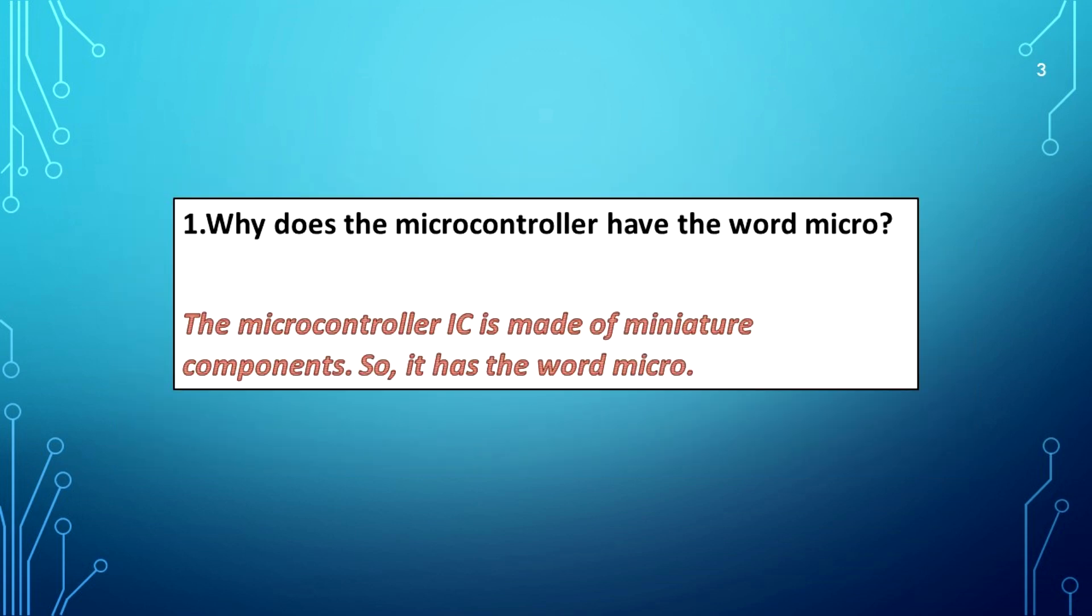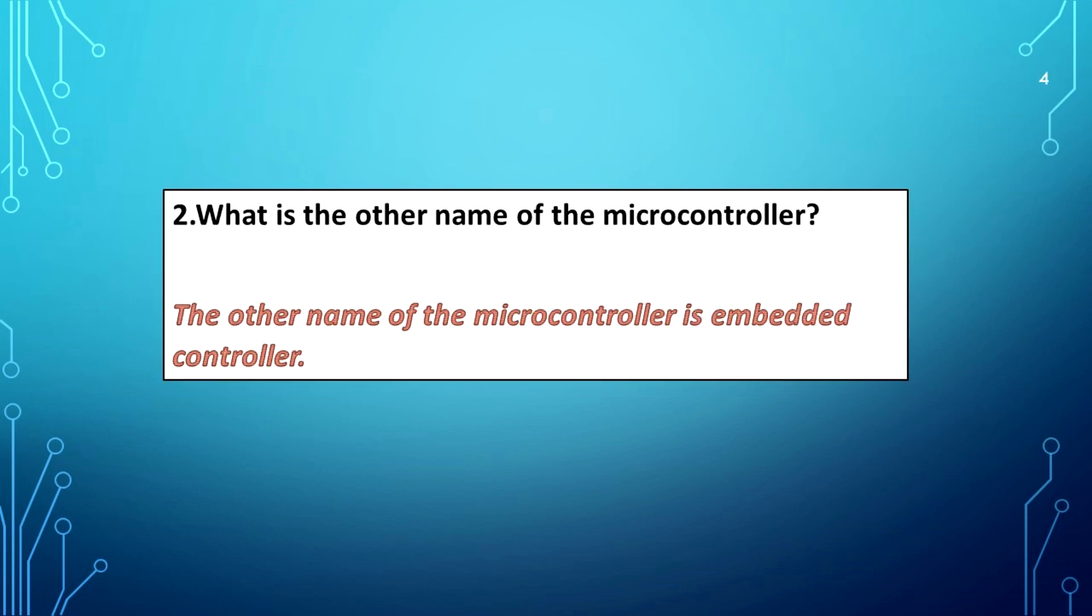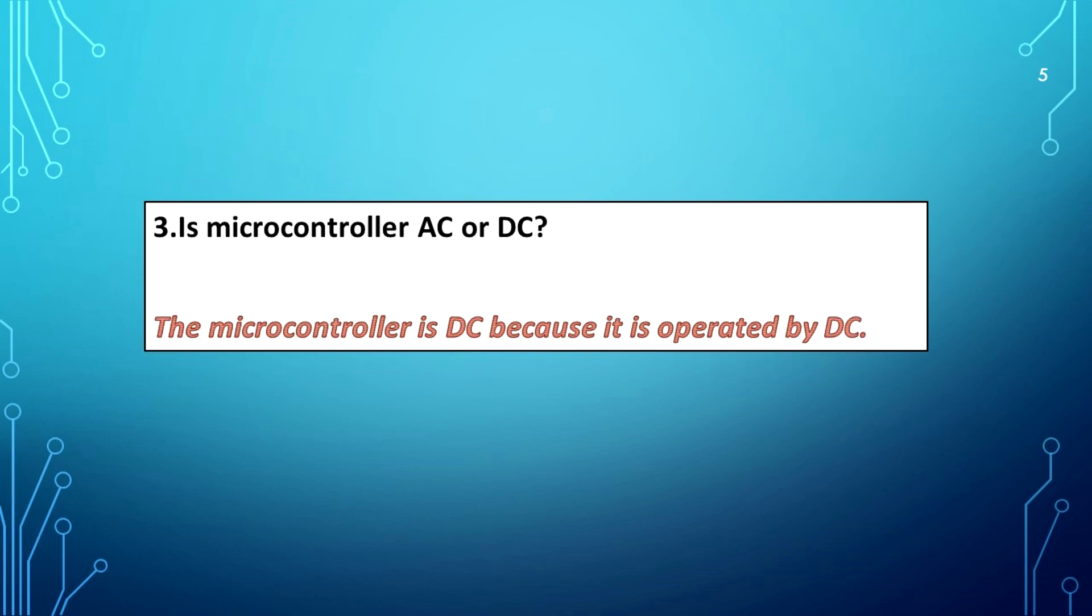Why does the microcontroller have the word micro? The microcontroller IC is made of miniature components, so it has the word micro. What is the other name of the microcontroller? The other name of the microcontroller is embedded controller. Is microcontroller AC or DC? The microcontroller is DC because it is operated by DC.